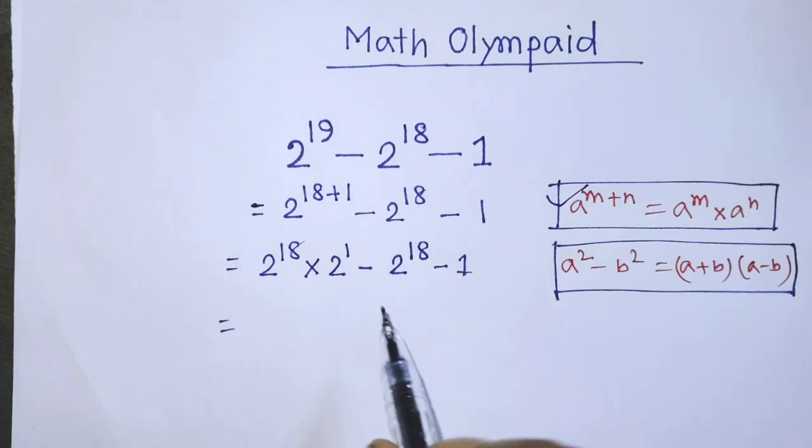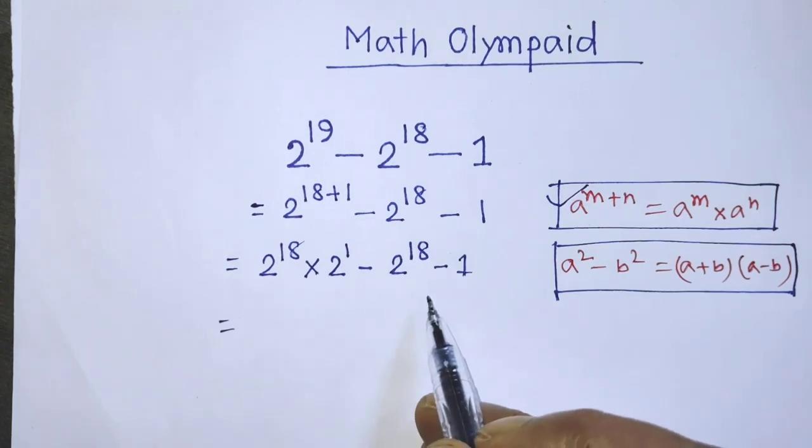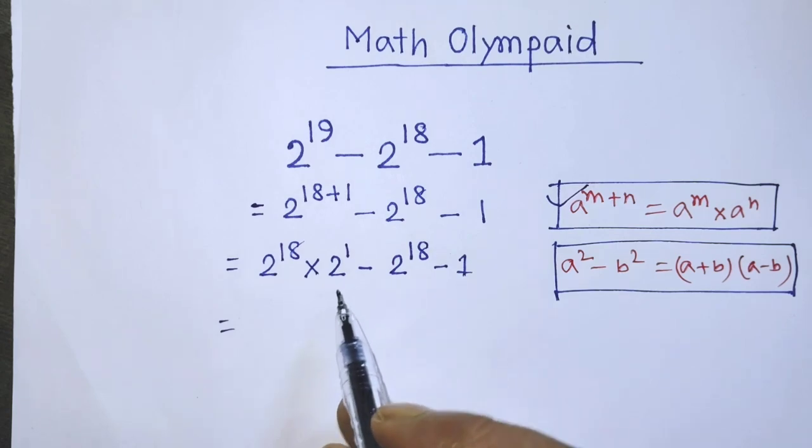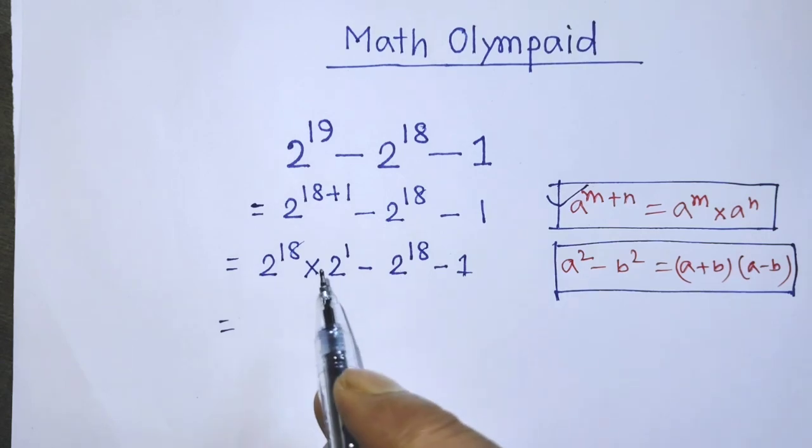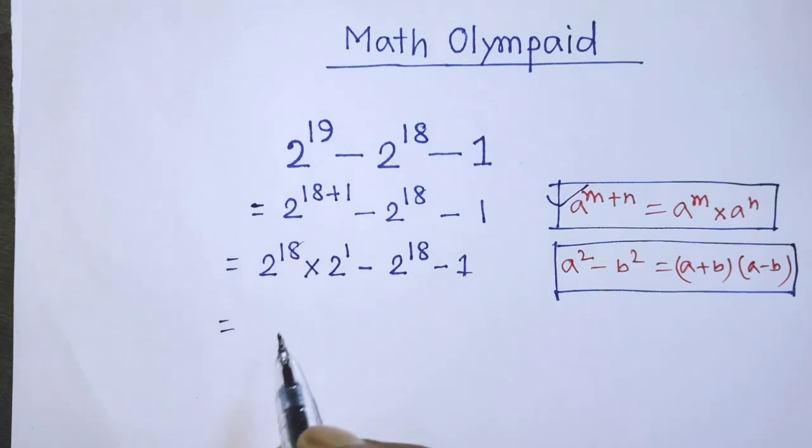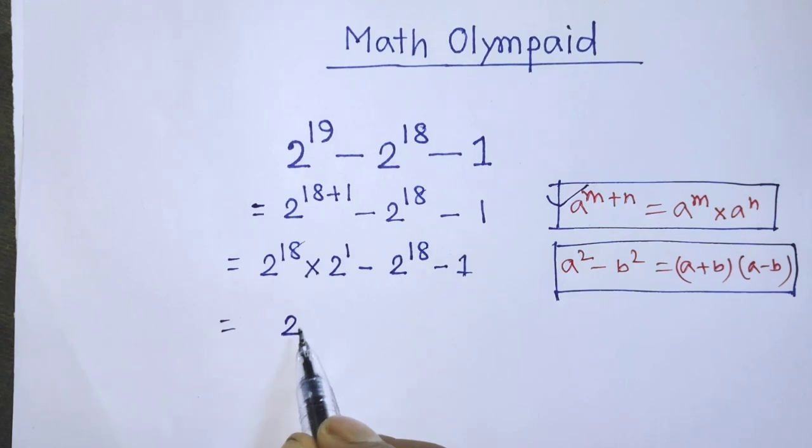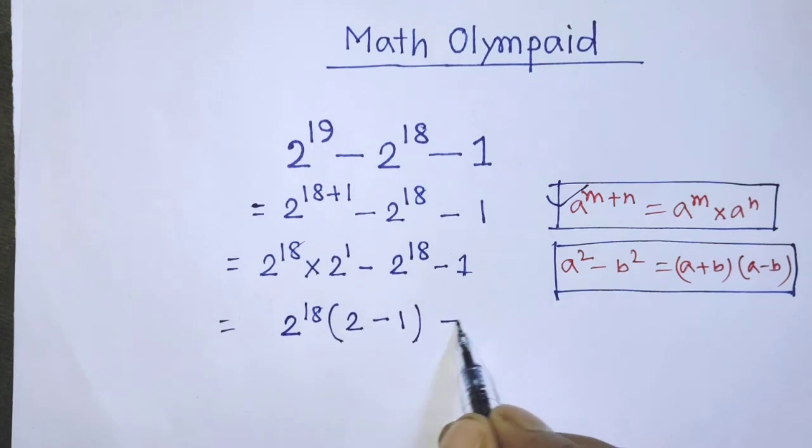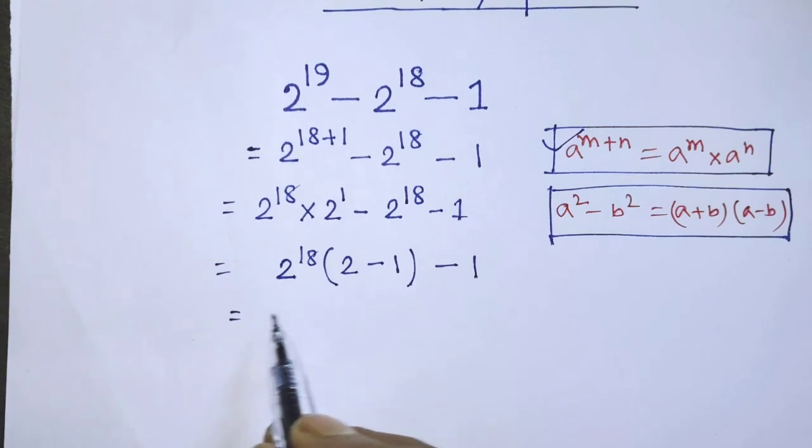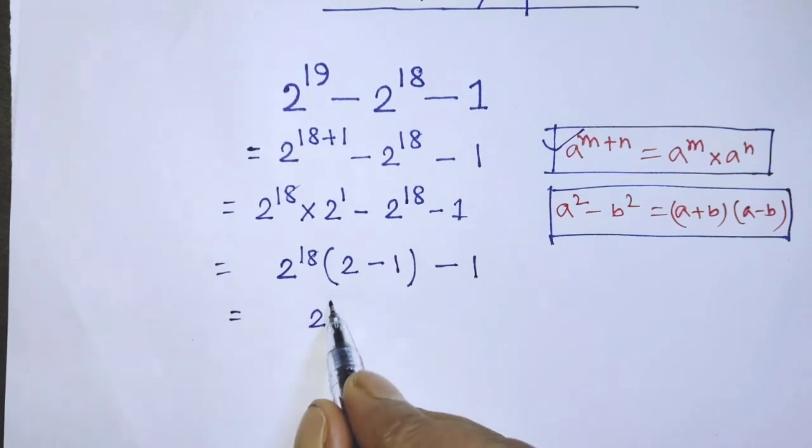In this algebraic expression, there are 3 terms and the common factor of first 2 terms is 2 to the power 18. So we can write from the first 2 terms, 2 to the power 18 times 2 minus 1 minus 1. After that, it will be 2 to the power 18 minus 1.